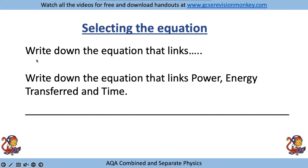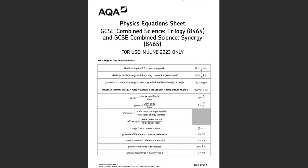For example, you might have questions that say 'write down the equation that links' - let's take this one: write down the equation that links power, energy transferred, and time. You look down your equation sheet and find the equation with all three of those words in it. Power equals energy transferred divided by time, so we would copy that straight onto our answer line.